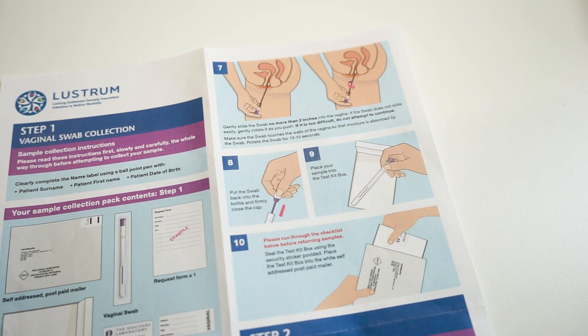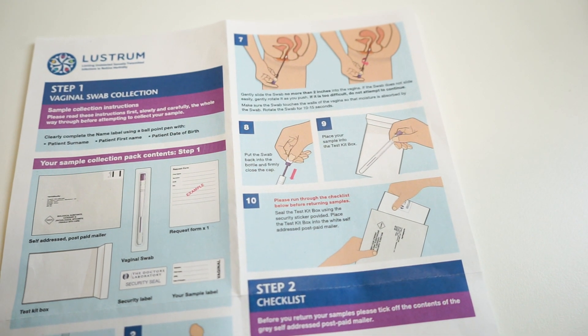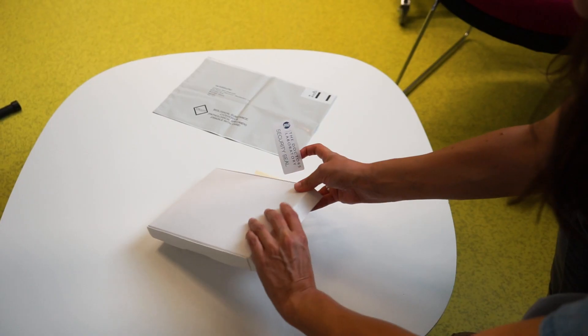Make sure the swab touches the walls of your vagina so that moisture is absorbed by the swab. Rotate the swab for 10 to 15 seconds. Put the swab back into the bottle and firmly close the cap.